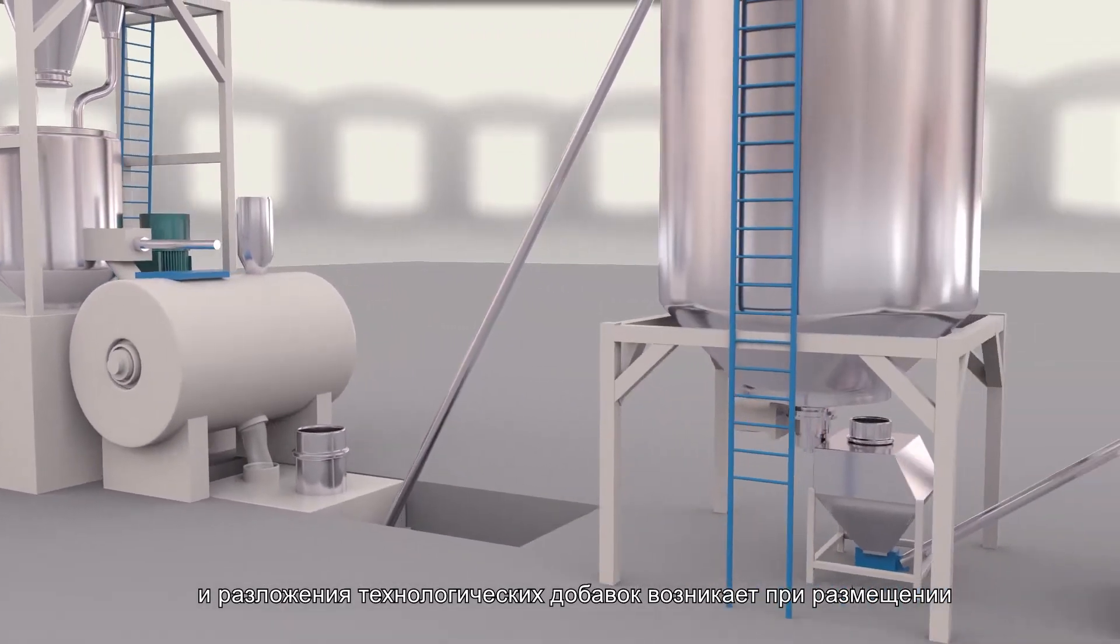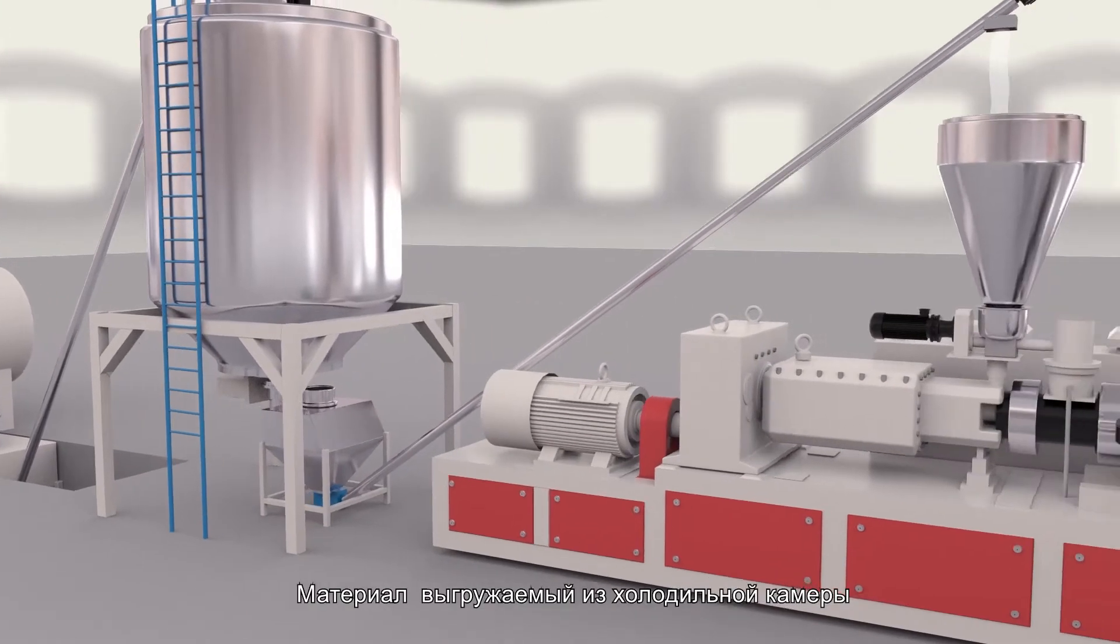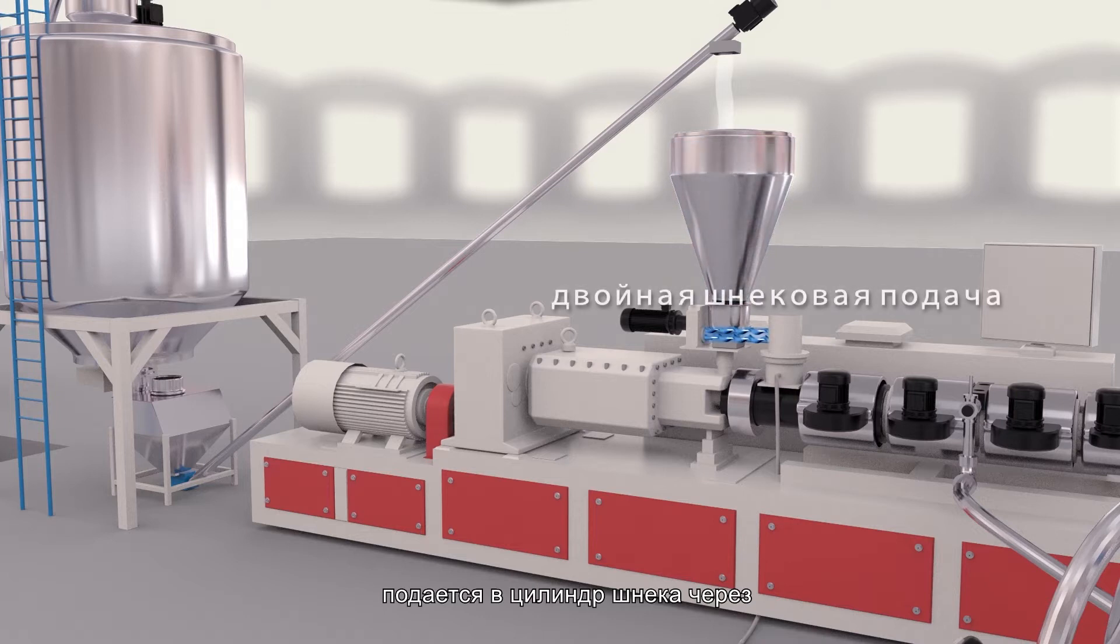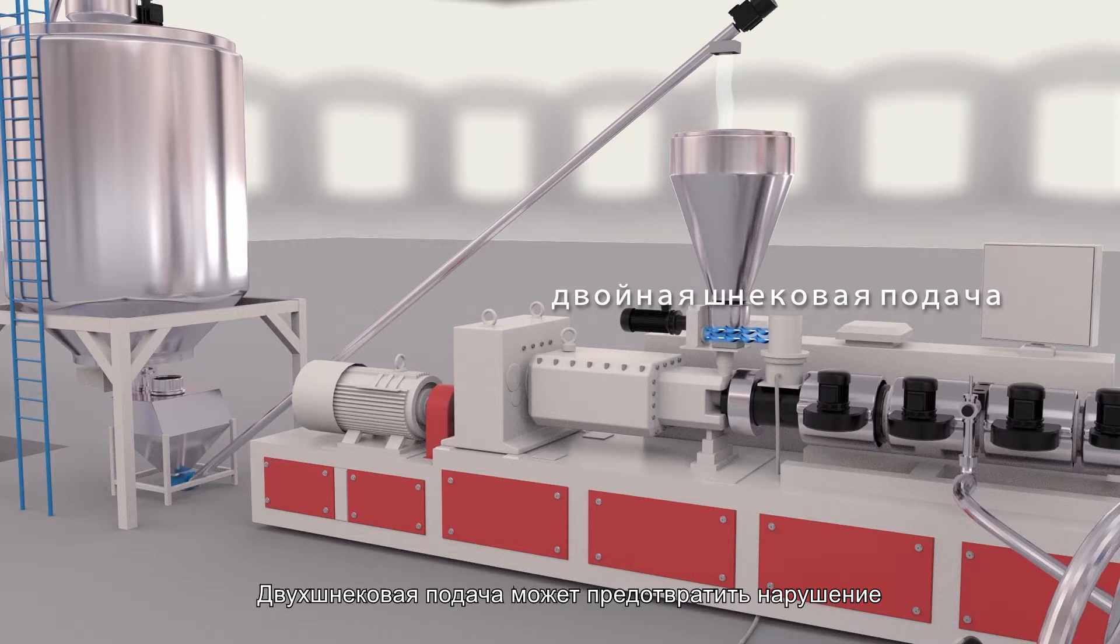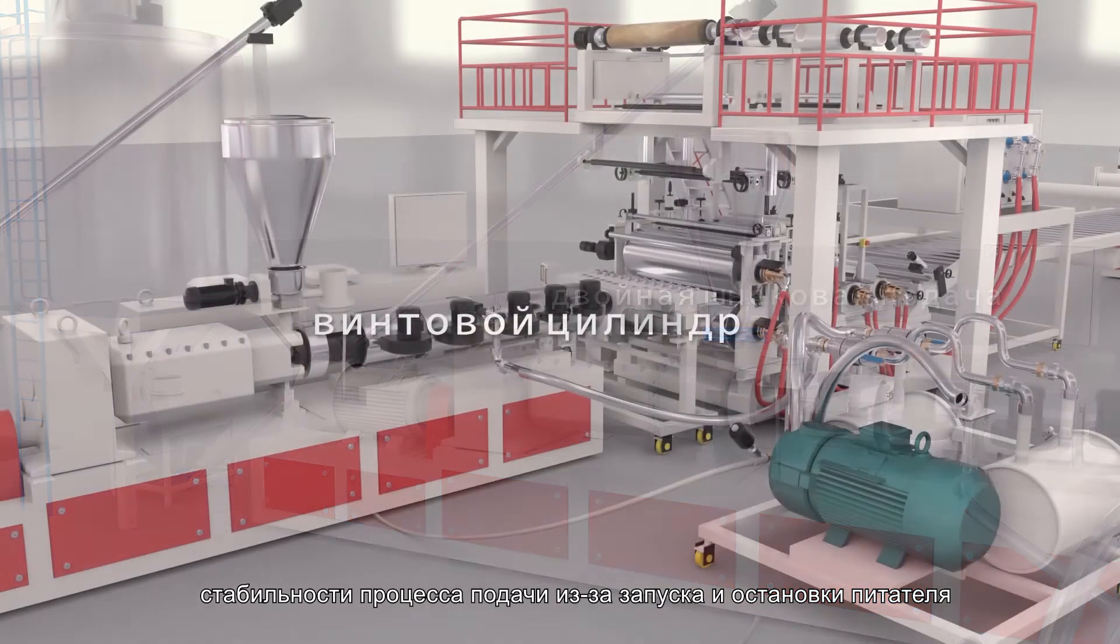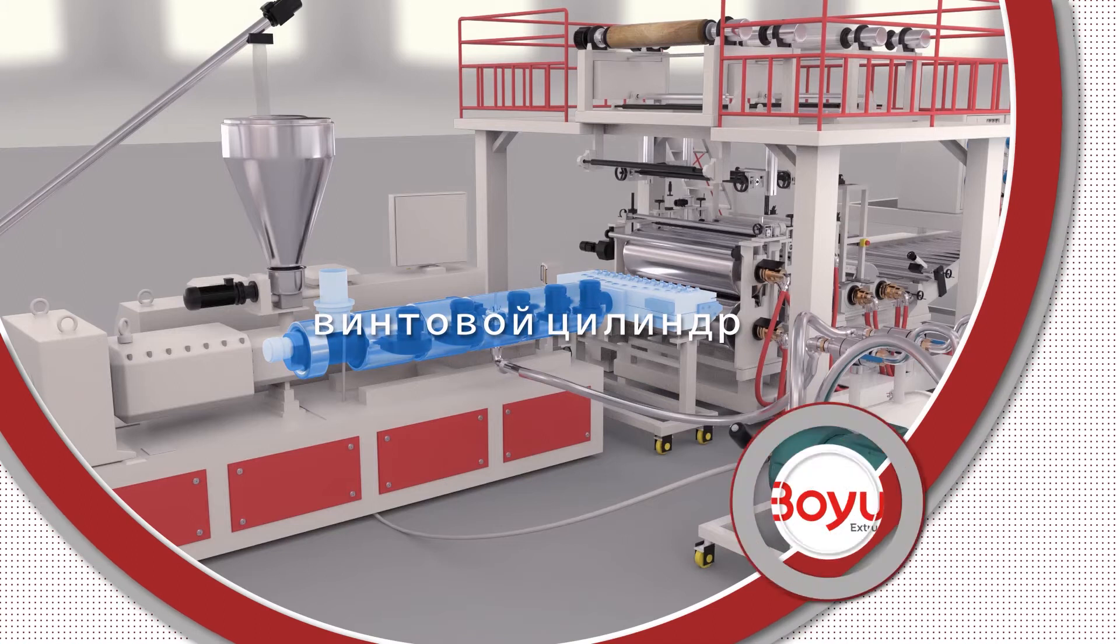The materials discharged from the cold pole are fed into the screw barrel by screw feeder at constant speed, while double screw feeding can avoid the influence of the sudden stop of the feeder on the stability of the feeding process. Extrusion System.